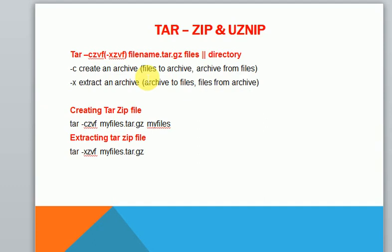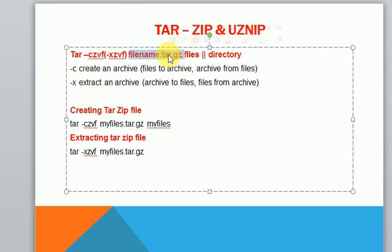tar is another command where we have different options. The c option is used for creating archive files from a list of files, and the x option is used for extracting files from an archive file. The archive file will have a .tar.gz extension. This is a command we will be using in Linux.